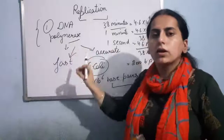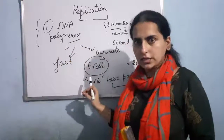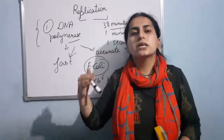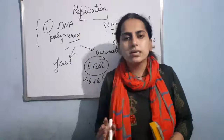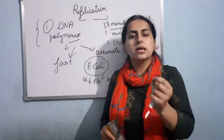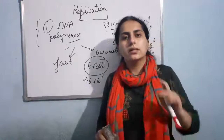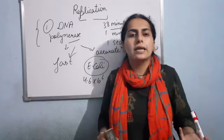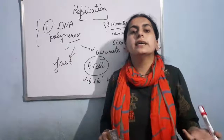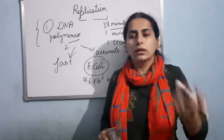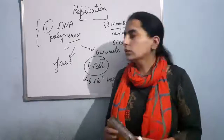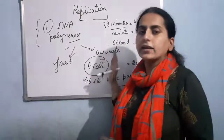DNA polymerase works very fast, and its replication is also precise — it is accurate. As you know, if there is a single change in the base pair, then the whole genotype of the organism can get changed. There could be mutation, and that could lead to various kinds of abnormalities, as we have discussed in chapter 5. So DNA polymerase is the most important enzyme involved in the process of replication.